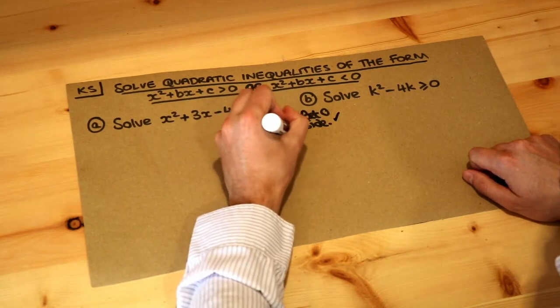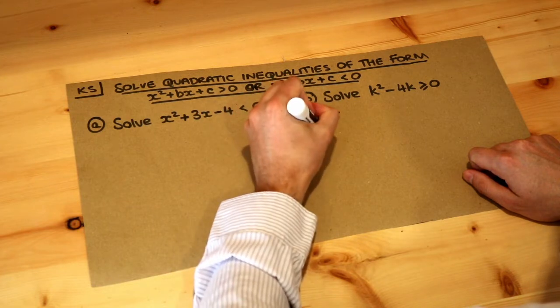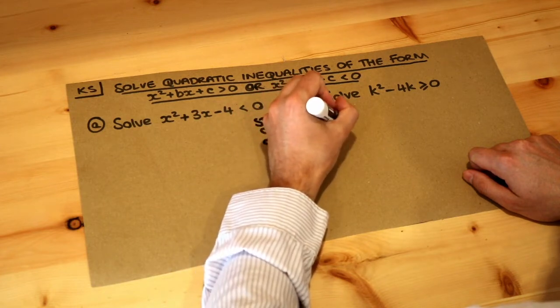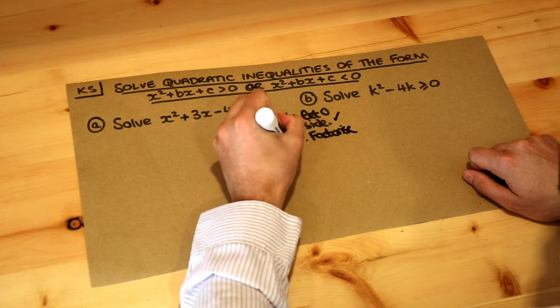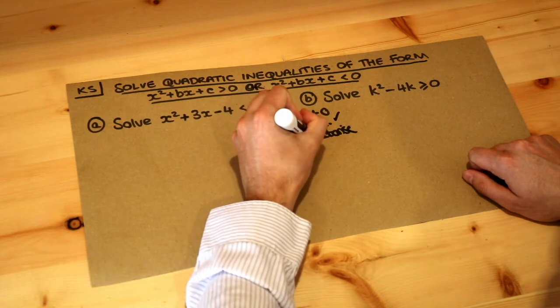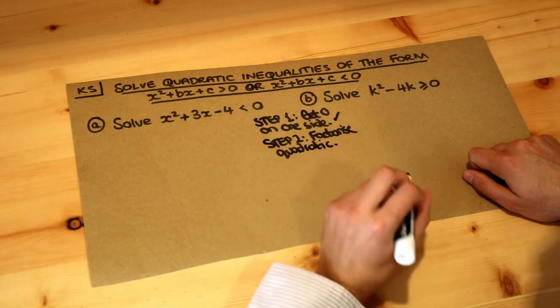Step two is to factorise the quadratic. So these are exactly the same steps as solving a quadratic equation for the moment. It's only the end that's going to be different.